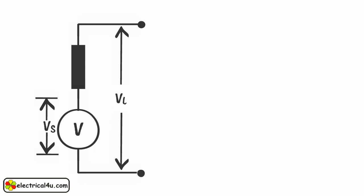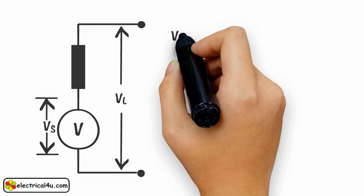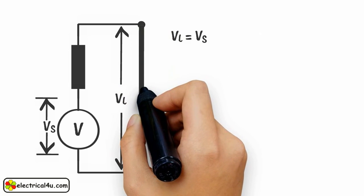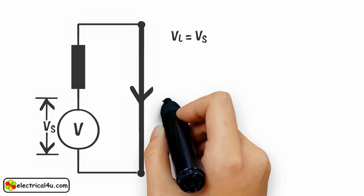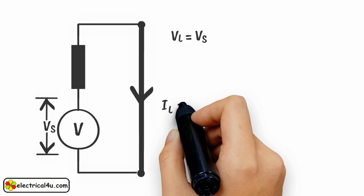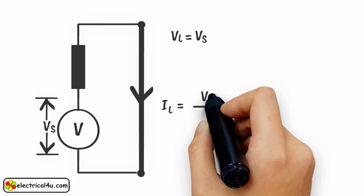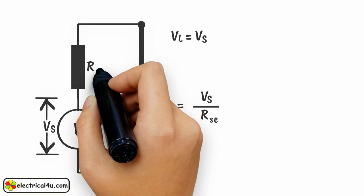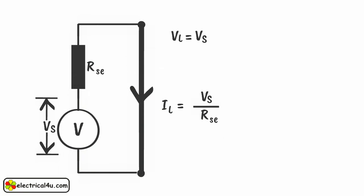From this figure, we can write VL at open circuit condition is equal to VS. That is, when the load is removed, the circuit becomes an open circuit, and the voltage across the source becomes the same as the voltage across the load terminals. When the load is short-circuited, the short circuit current IL will be VS divided by RSE, where RSE is the internal resistance of the source.